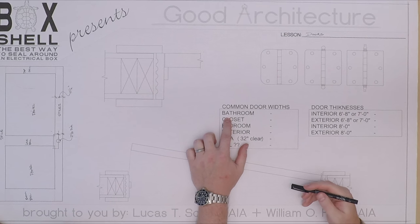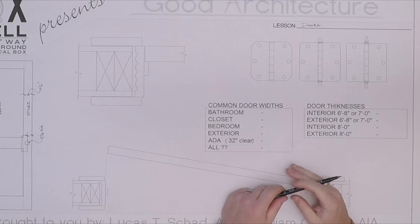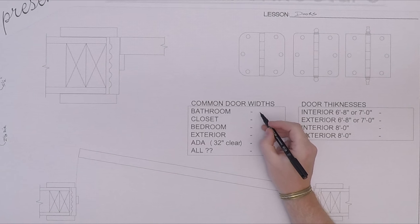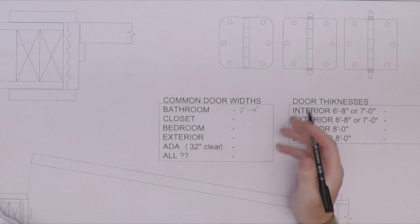In the bathroom, we usually start with a two-foot-four-inch door, or 28-inch door. This is a standard door and does not take into account any extra width you may need for a wheelchair or for universal design.